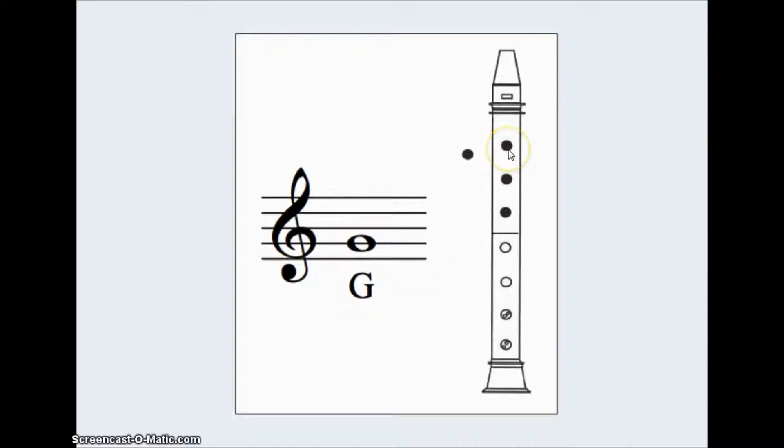To play G, your left pointer covers the first hole, your left middle finger covers the second hole, and your left ring finger covers the third hole. The thumb is still covering the hole on the back.